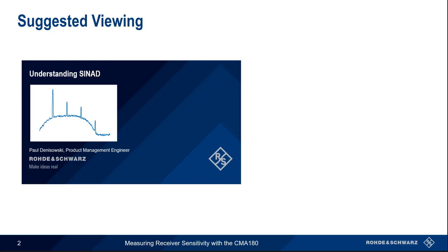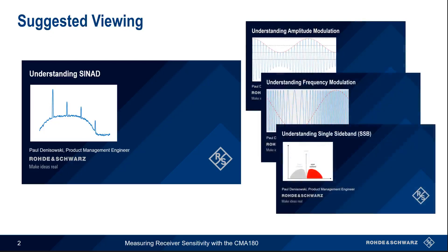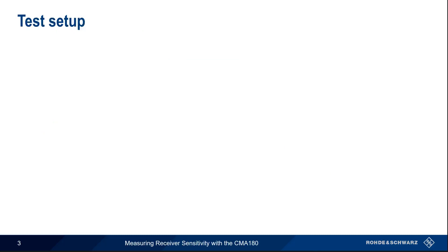There are also additional presentations available on AM, FM, and single sideband modulation if you'd like an overview or a refresher on any of these analog modulation types. In this presentation, we'll be showing how to measure the sensitivity of an FM receiver, although the procedure is essentially identical when measuring AM or single sideband.